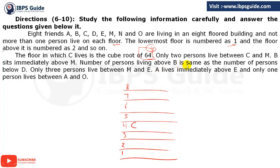Only two persons live between C and M — so M can be above or below C, giving two possibilities. In one possibility M is on the 7th floor; in the other, M is on the 1st floor. B sits immediately above M — so B must be immediately above M in each case: B on the 8th floor in one case and B on the 2nd floor in the other.